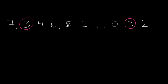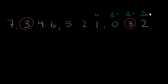So let's write down all the place values. This right over here is the ones place. As we move to the right in place values, each place represents one tenth of the place before it, or you could divide by 10 as we move to the right. So this is the ones place. Divide by 10 — this is the tenths place. Divide by 10 again — this is the hundredths place. Divide by 10 again — this is the thousandths place.